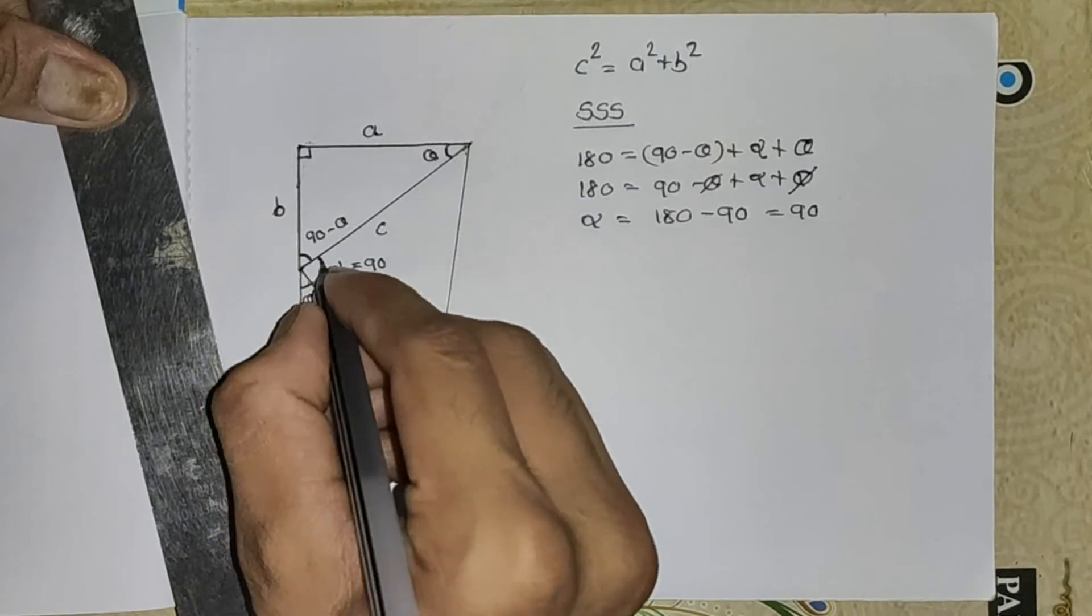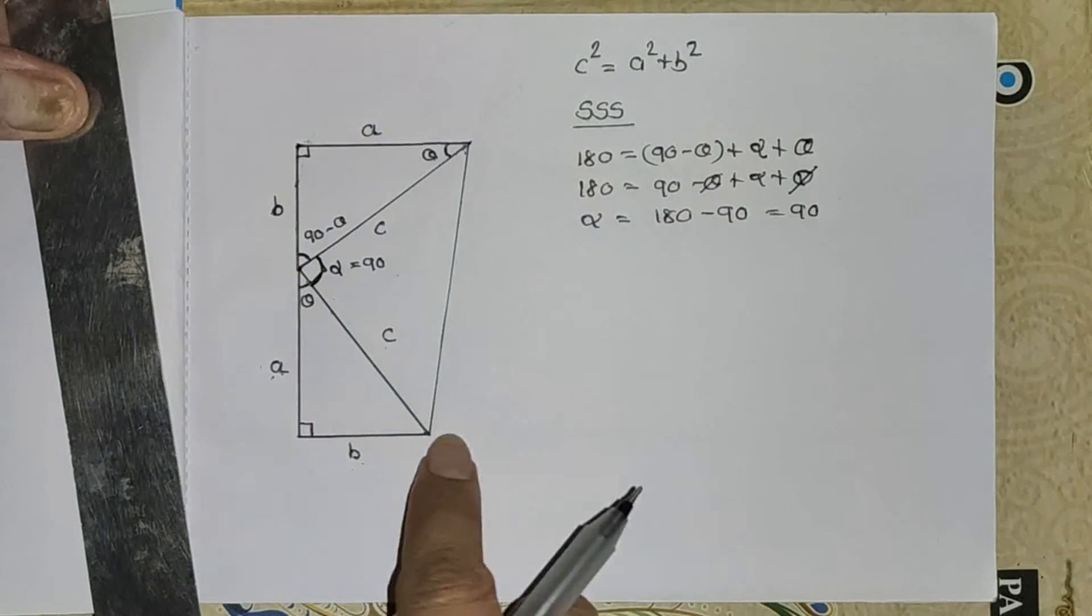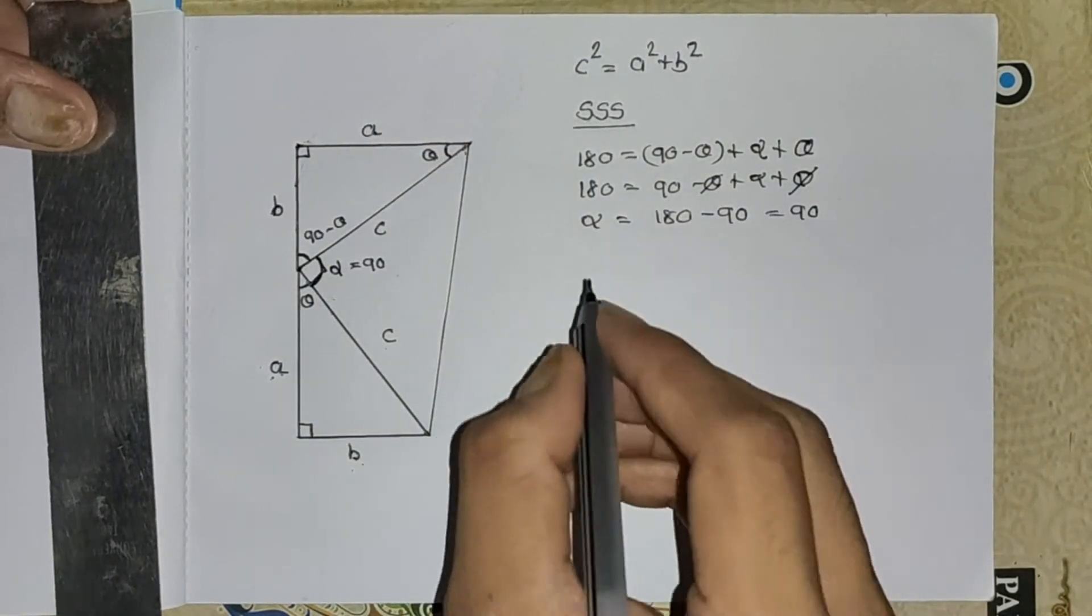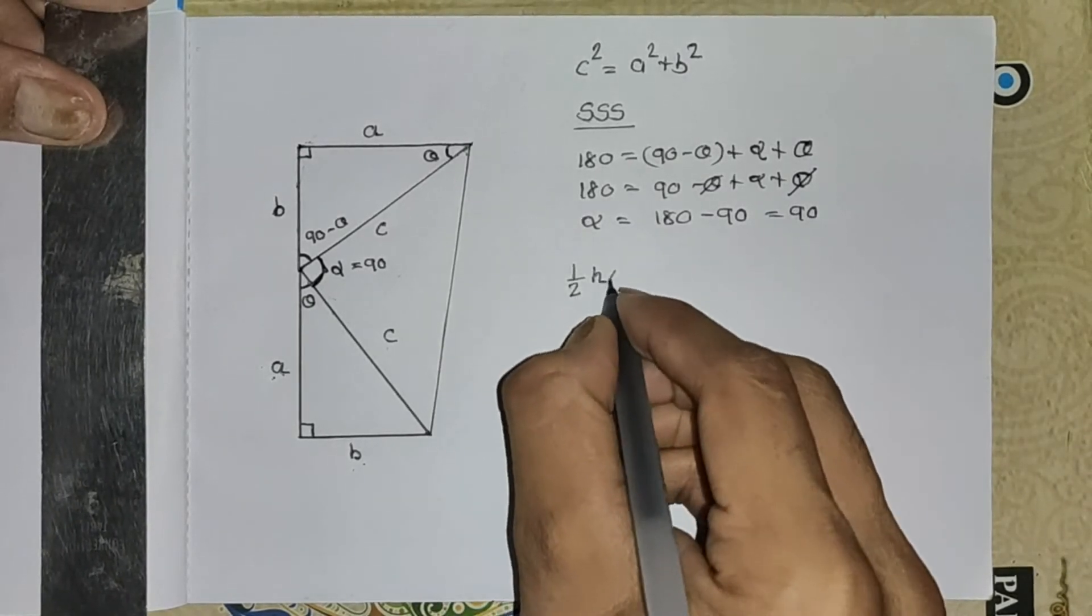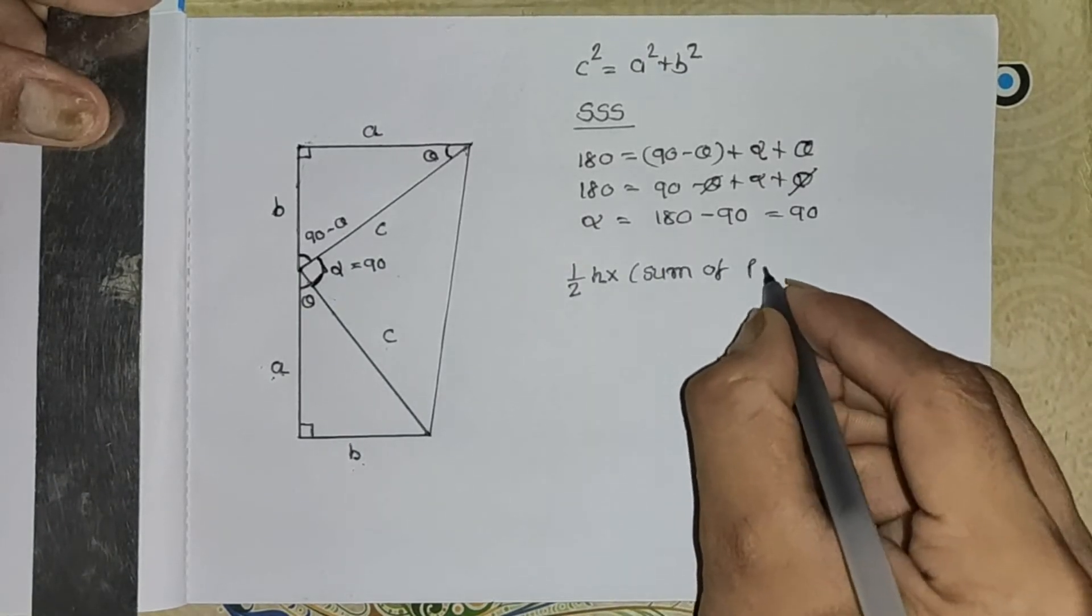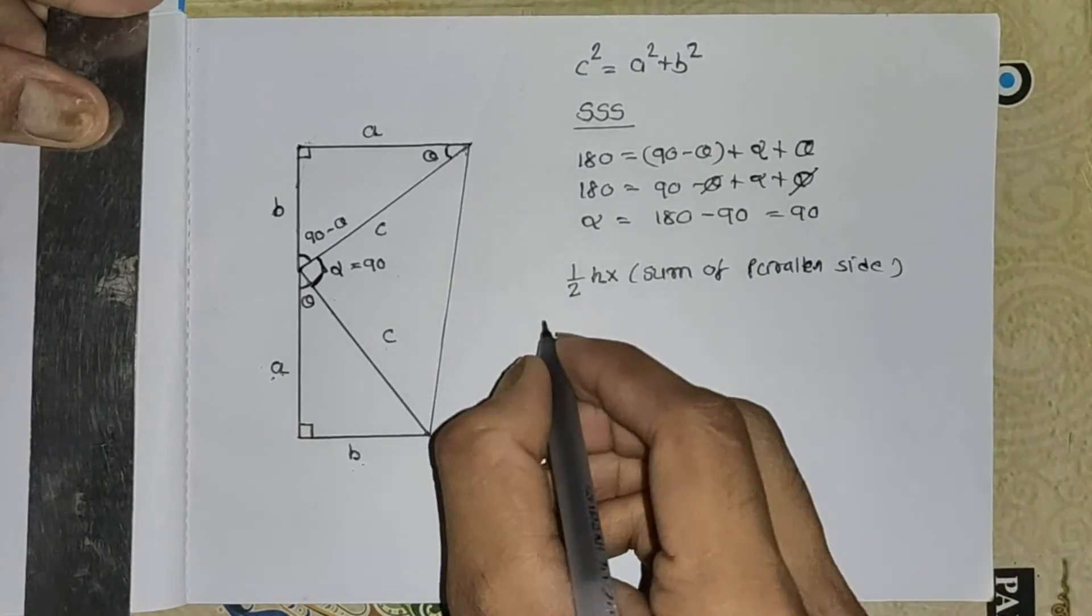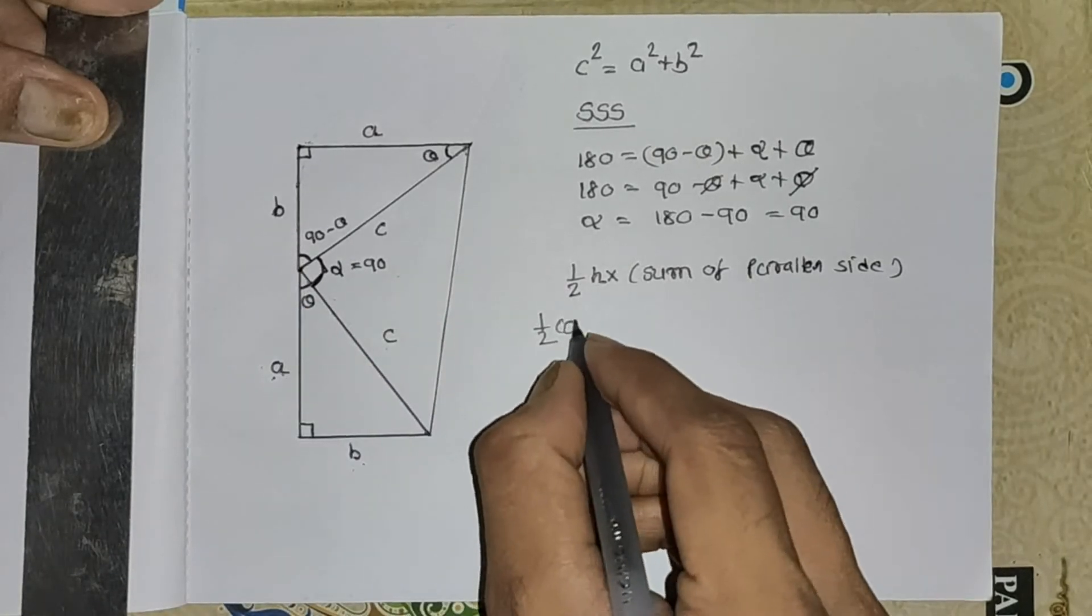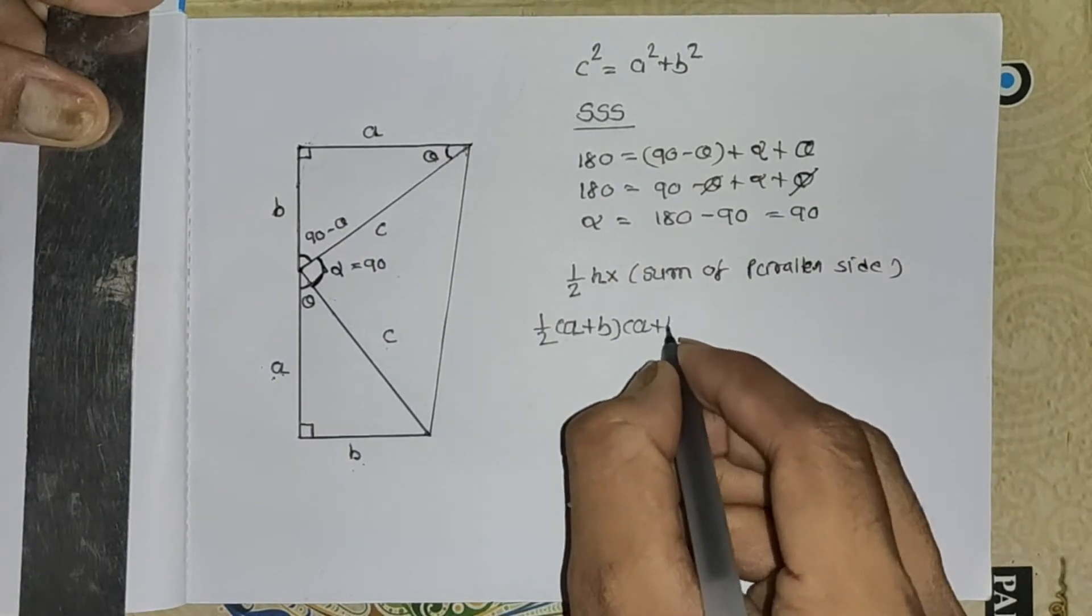Now this quadrilateral is a trapezoid. So we know the area of a trapezoid is one half height into sum of parallel sides. One half, what is height? a plus b, and parallel sides a plus b.